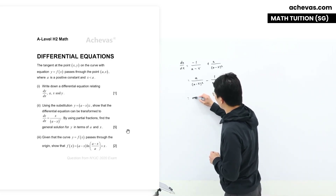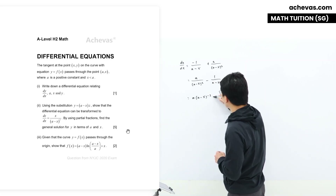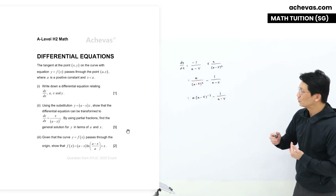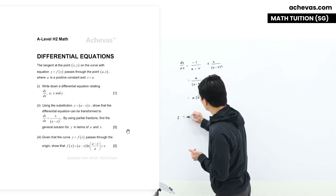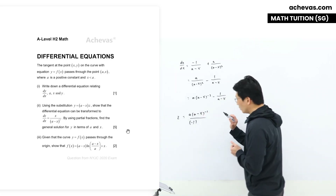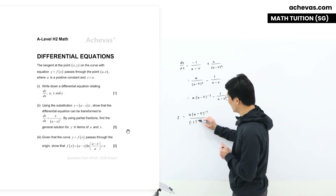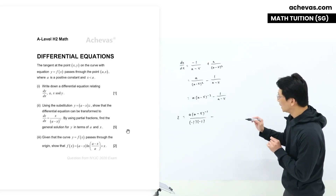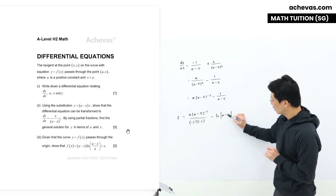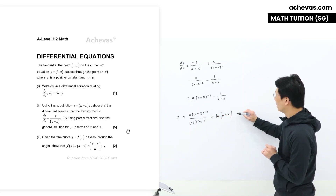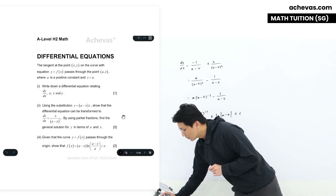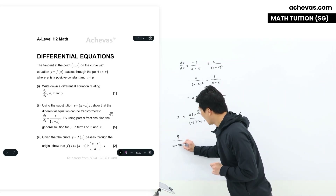I'm going to shift the denominator out: dz/dx = a(a - x)^{-2} minus 1 over (a - x). Integrating both sides with respect to x: on the left-hand side I get z. Integrating a(a - x)^{-2} gives a(a - x)^{-1} over (-1), accounting for the coefficient of x which is minus 1. Integrating minus 1 over (a - x) gives plus ln|a - x|, plus constant C. Now replacing z back as y over (a - x).